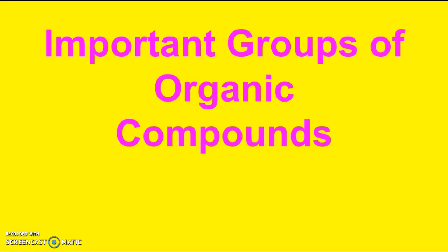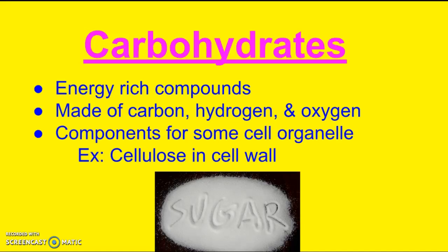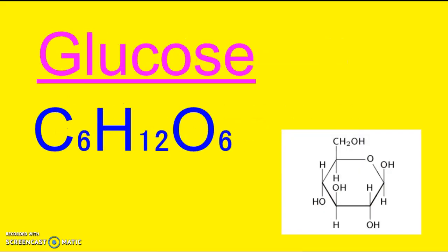There are four really important groups of organic compounds. The first one is carbohydrates — these are really energy-rich compounds. You might think of a runner: before a big race, they'll do what's called a carbo-load, getting all those carbohydrates in so that they have all that extra energy for their race the next day. Carbohydrates are made of carbon, hydrogen, and oxygen, and they are components for some of the cell organelles. An example would be the cellulose in the cell wall of a plant cell. Glucose — C6H12O6 — is probably the most important carbohydrate in cells.